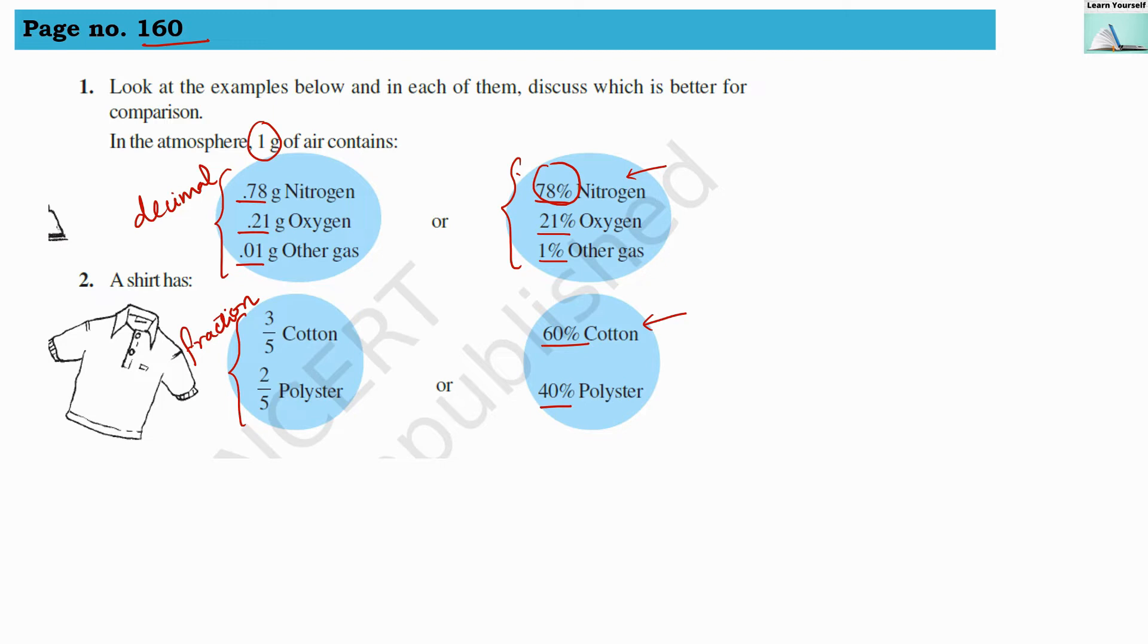Here it is confusing that whether 3/5 is more or 2/5 is more. We have to think about it a little bit and then we will guess that yes, cotton share is more. So whenever the percentage comparison is there, it is very easy to judge which quantity is more and which quantity is less. In routine life, in general terminology, the percentage comparison is preferred over the decimal comparison and fractional comparison.